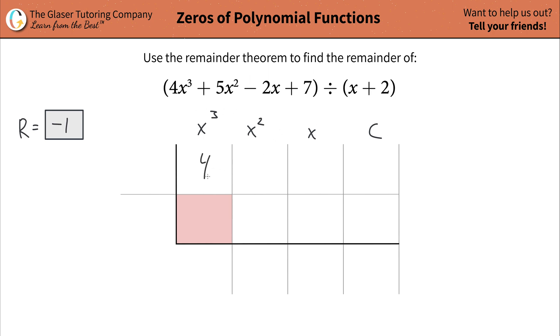So the coefficient of the x cubed term is going to be a four. Coefficient of the x squared term is a five. Coefficient of the x term is a negative two. And constant seven.